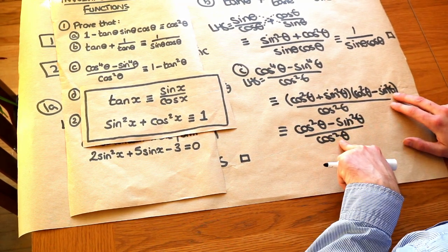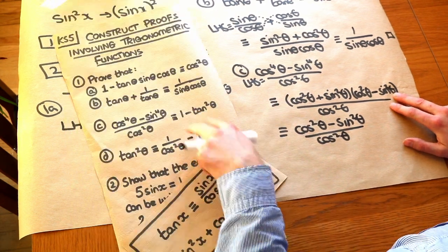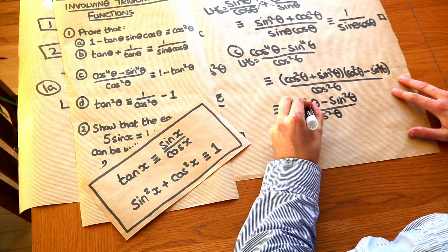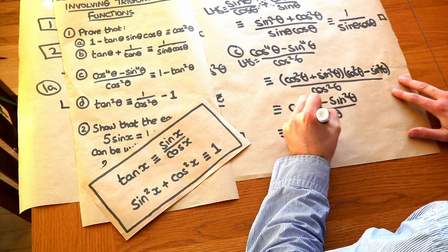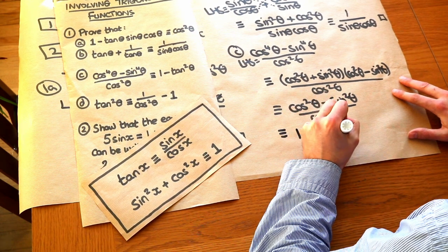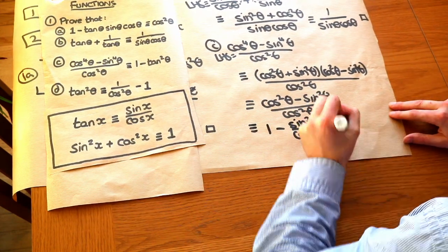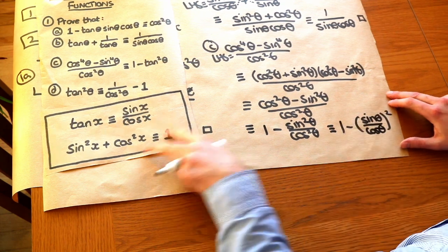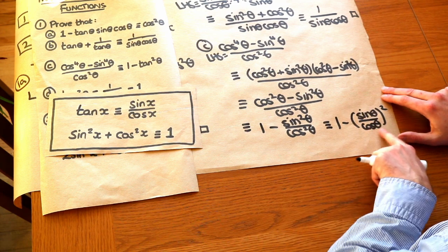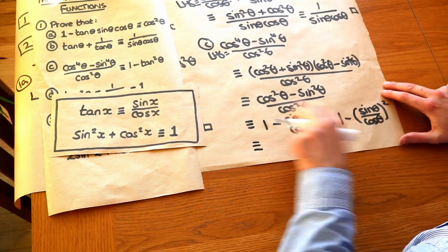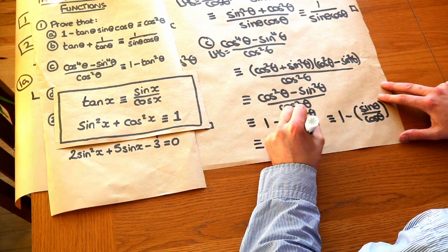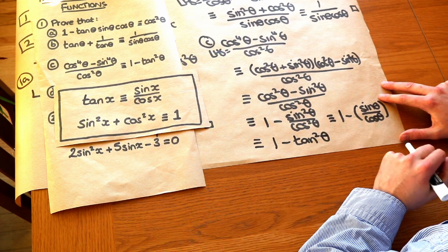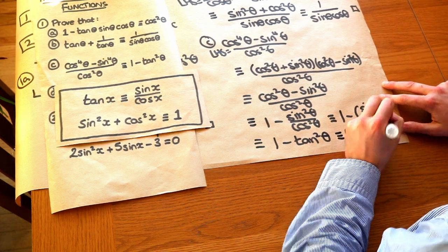If I split up this fraction, I'd have cos squared theta over cos squared theta — which is 1 — minus sine squared theta over cos squared theta. That sine squared theta over cos squared theta, if I move the squared outside, is (sine theta over cos theta) squared. Since sine of theta over cos theta equals tan of theta, this is tan squared theta. So we end up with 1 minus tan squared theta, which equals the right-hand side. Proof complete.